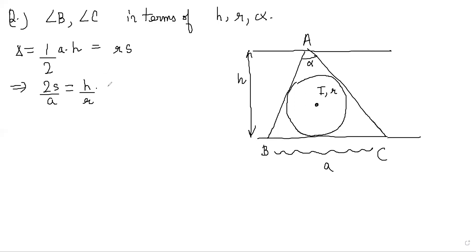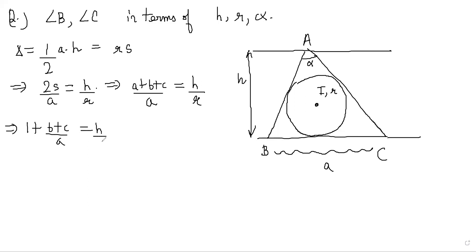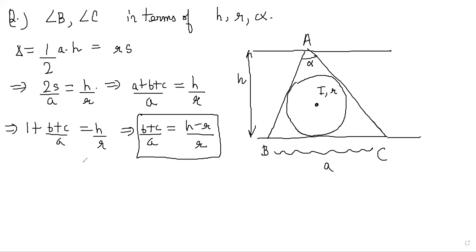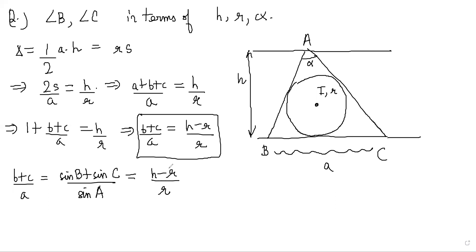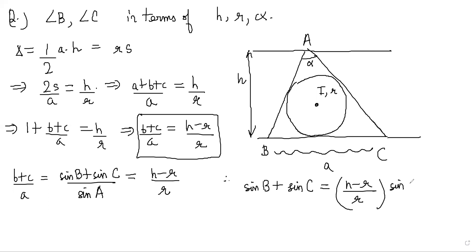That is the first result. Now 2s equals a plus b plus c, so (a + b + c) divided by a equals H divided by R. Therefore 1 plus (b + c)/a equals H/R, which implies (b + c)/a equals (H minus R)/R. By the sine rule, (b + c)/a equals (sin B + sin C)/sin A, so sin B + sin C equals (H minus R)/R times sin A.